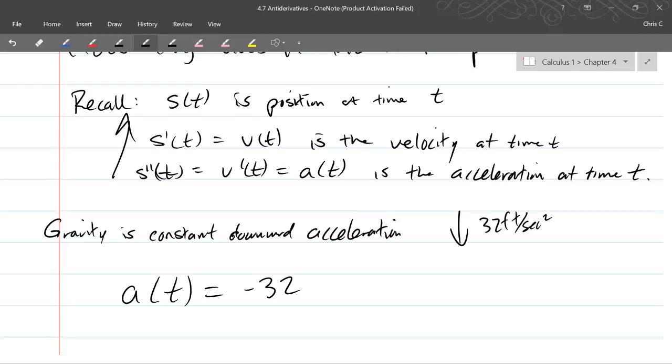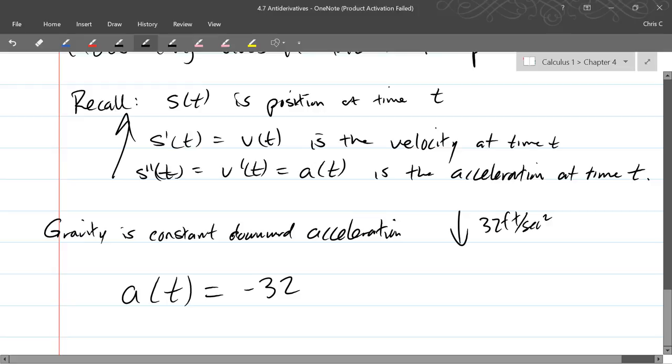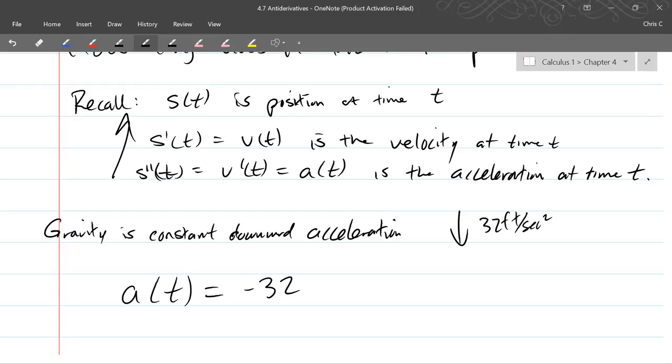You can also look at units, position in this problem is measured in feet, and then the velocity is feet per second, and then the acceleration is feet per second squared. So you can do a unit analysis basically, which is a very physics thing to do. So if you ever forget, just think, if you think of miles as your distance, miles per hour is your speed, and then your acceleration is miles per hour squared, would be your acceleration.